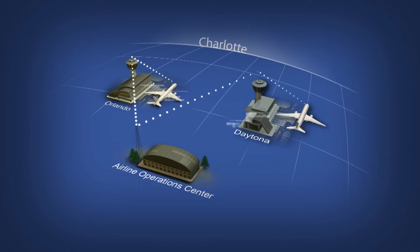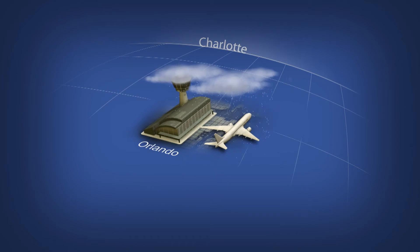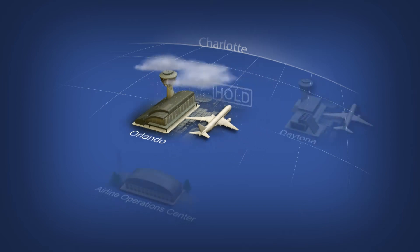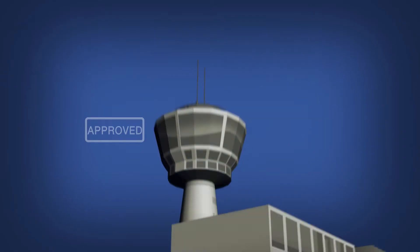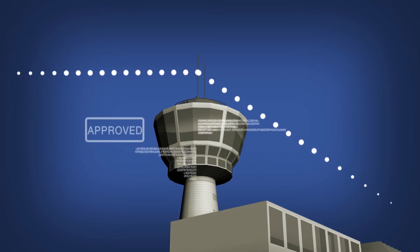The Orlando flight was scheduled to depart first, but a storm moves in, delaying the flight and possibly delaying flights at other airports. The Orlando controller orders a hold and modifies the surface flight data object, which automatically updates the airline, giving them the information they need to consider their options. The airline asks if its Daytona Beach flight can be released and put into the flow earlier to take advantage of the new opening in Charlotte. The Daytona Beach controller agrees and accepts a new departure time calculated by the service decision tool.